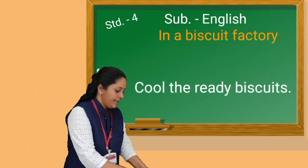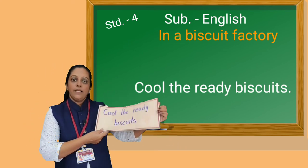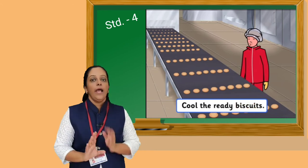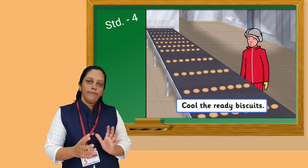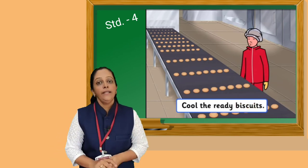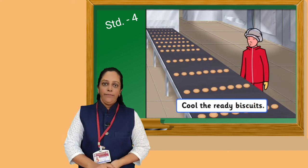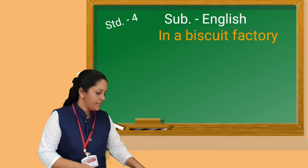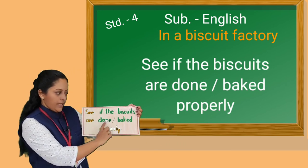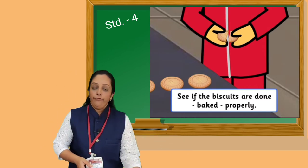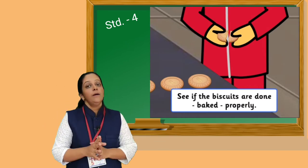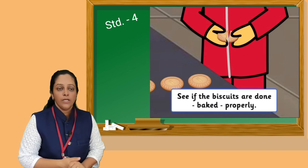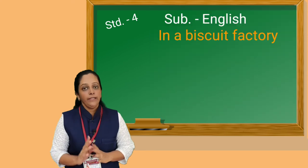After that, the next step is: Cool the ready biscuits. It is a very important step. When the biscuits come from the oven, they are hot and smooth, so we can't touch them immediately. It is very important to cool the ready biscuits. After cooling the biscuits, our next step is: See if the biscuits are done or baked properly. We have to check the biscuits if they are baked properly. If the biscuits are overcooked, they will become firm while cooling. So this is an important step — we have to check them properly.